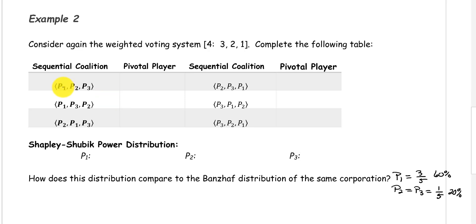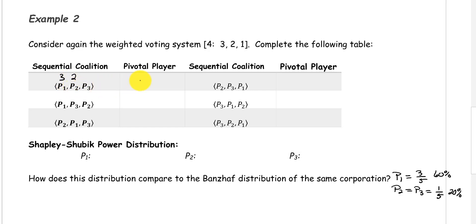So our first sequential coalition is player 1, 2, and 3. The weight of player 1 is 3, which does not meet our quota, so now we need to add in player 2, who has a weight of 2, and 3 plus 2 is 5, meeting our quota. So player 2 is our pivotal player.